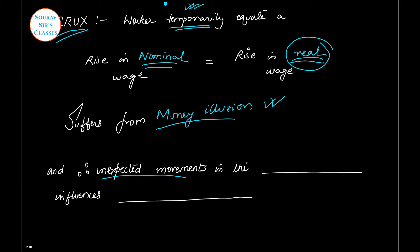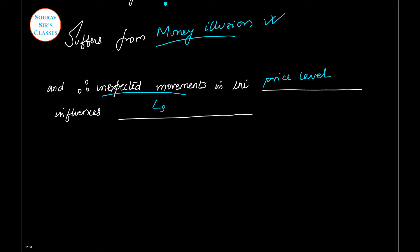Because there is money illusion, there is unexpected movement in the price level. And whenever there will be unexpected movement in the price level, it will be able to influence the labor supply.